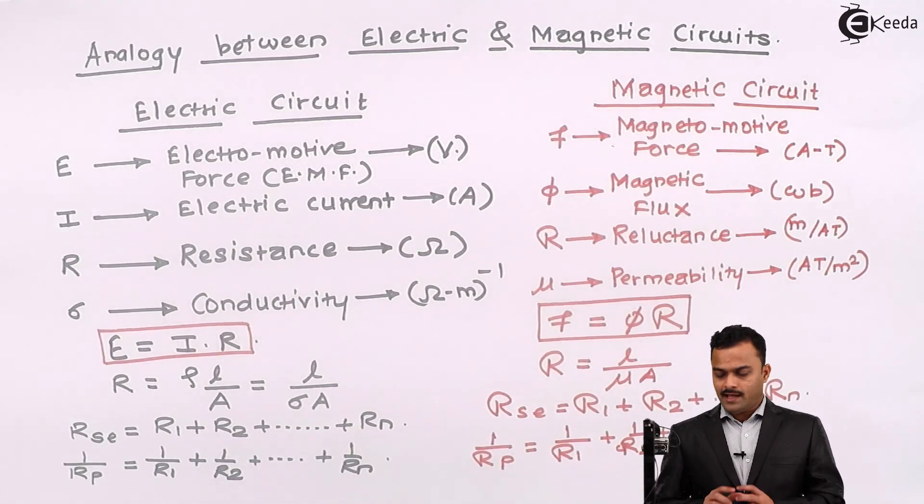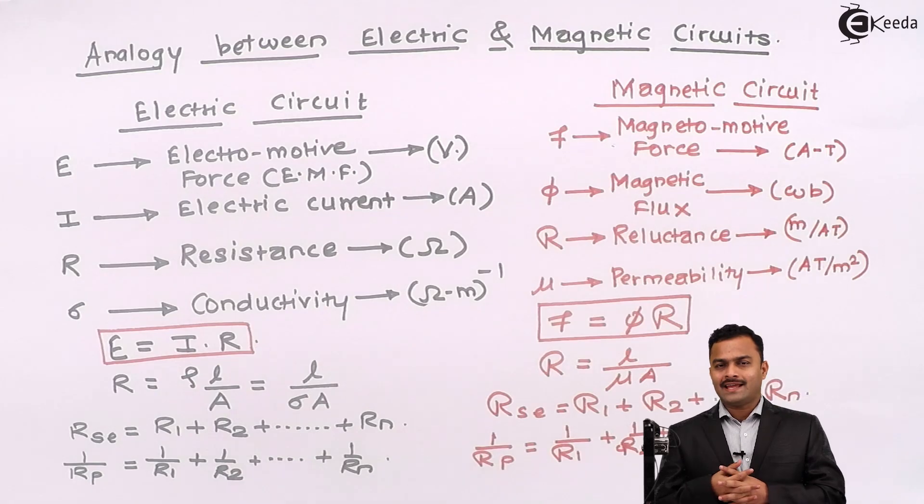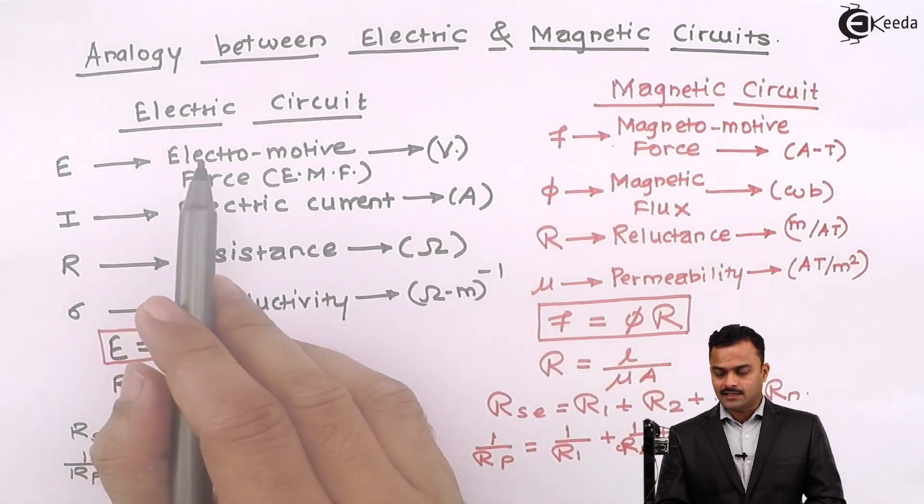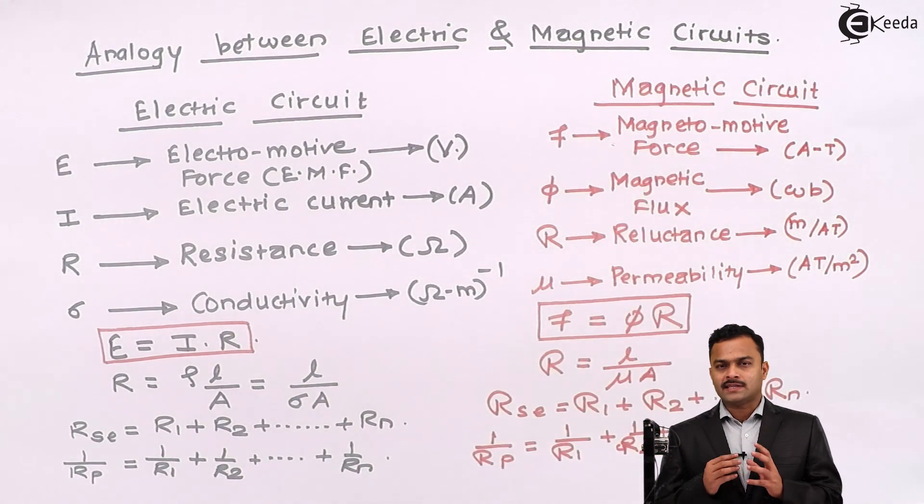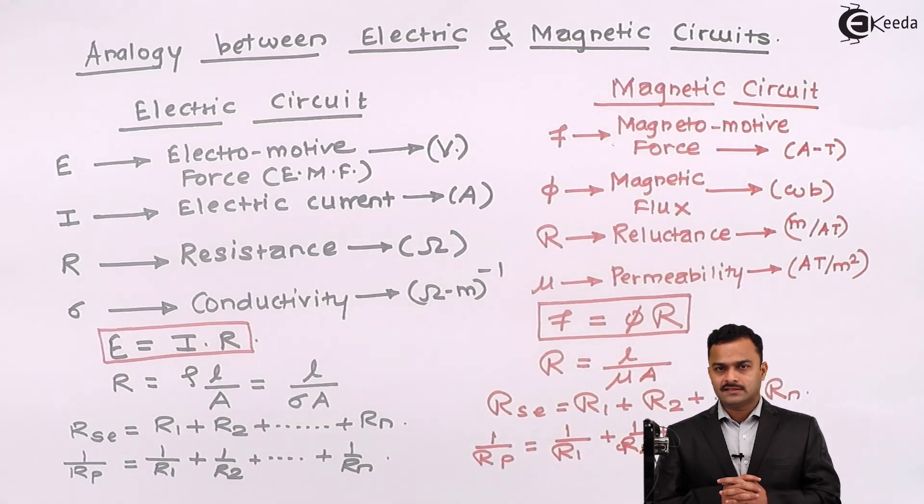So here we have established an analogy between electric and magnetic circuit. So most of the time while solving the problem, we are going to consider magnetic circuit as close as possible similar to that of electric circuit.